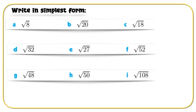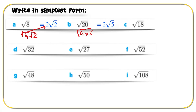Here are some radicals to simplify — write them in simplest form. Pause the video here and once you're done I'll give you the answers. Root 8 can be written as root 4 times root 2; since 4 is a perfect square that gives us 2 root 2. Root 20 can be written as root 4 times root 5, and root 4 is 2, so we get 2 root 5. Root 18 can be written as root 9 times root 2, giving 3 root 2 because root 9 equals 3.